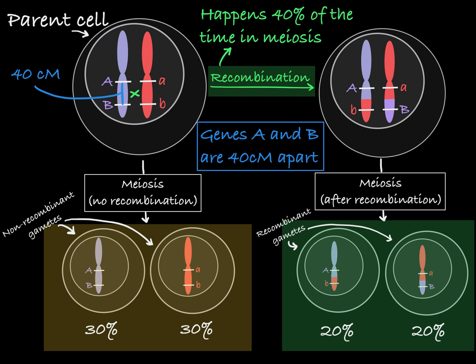Knowing the centimorgans between two genes can help you predict the offspring genotype proportions, as you can predict the total percentage of each type of gamete a parent will produce.